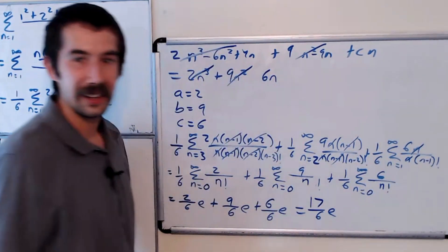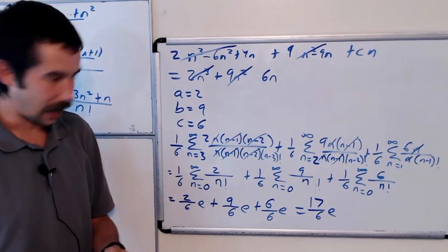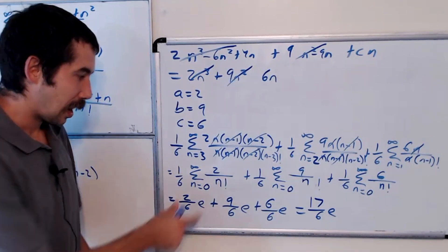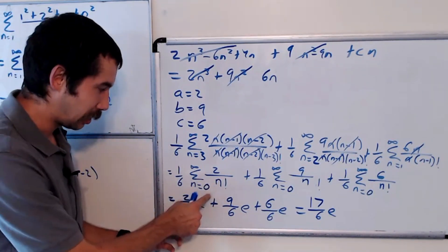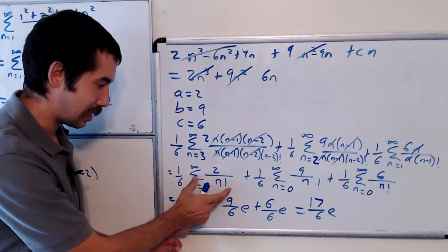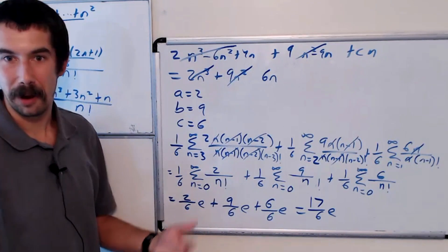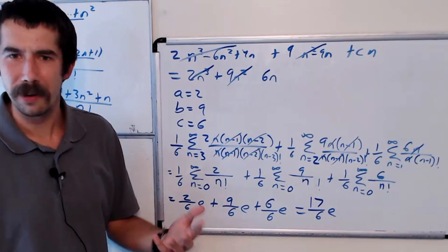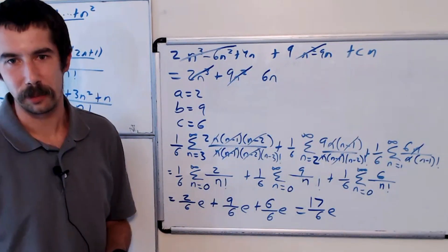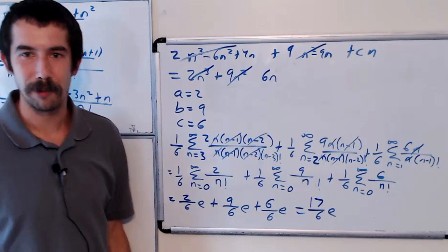Let me know if you're able to solve it, and let me know if you need more of an explanation for why the sum of 1 over n factorial equals e — maybe I'll make a video in the future explaining that, though there are already many videos covering that concept. Thanks for watching.